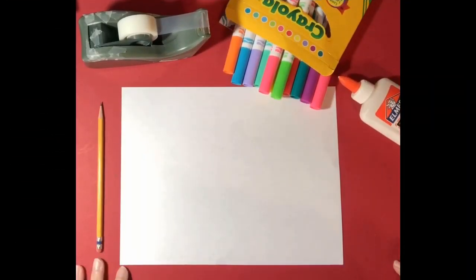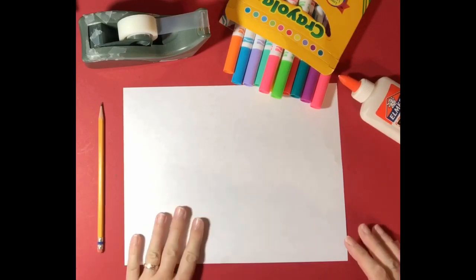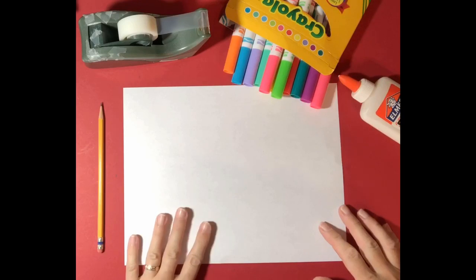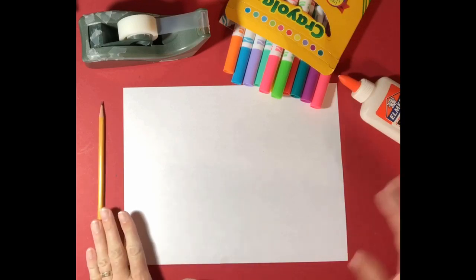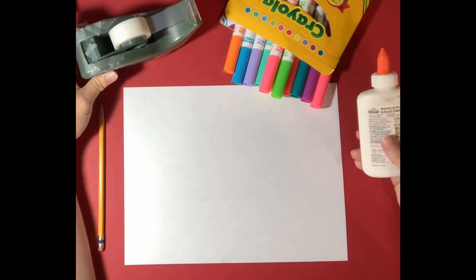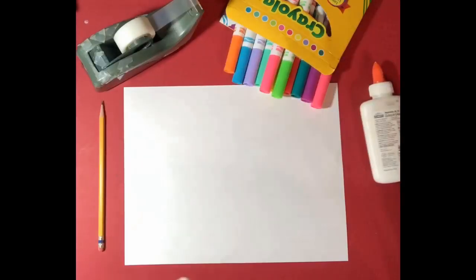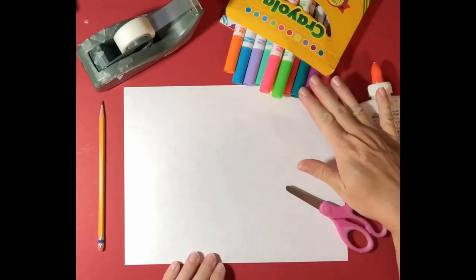Alright, things that you'll need for this lesson include paper. You'll probably need at least two sheets, maybe three. You'll need pencil. You'll need tape or glue. Either one will be fine. You might even get by using a stapler in some areas. You'll need scissors and you'll need markers.